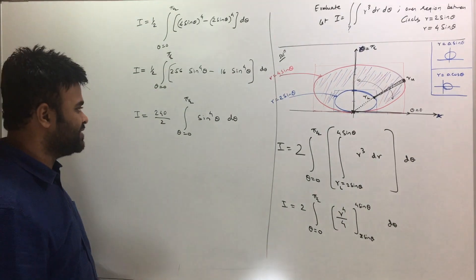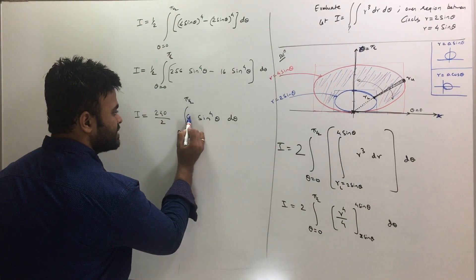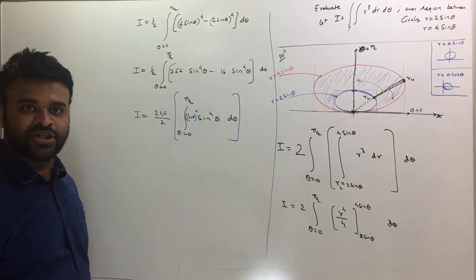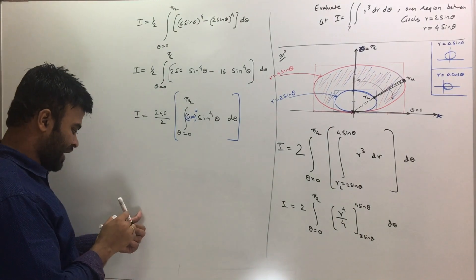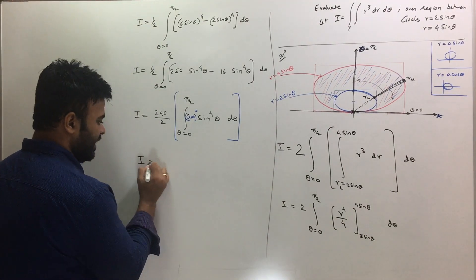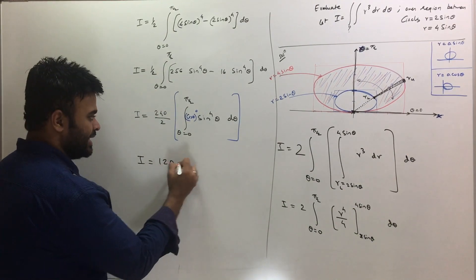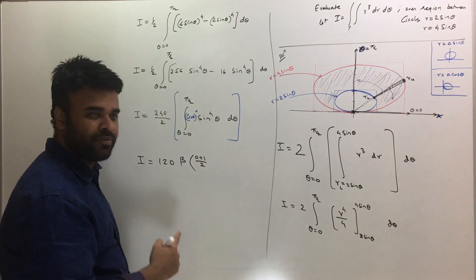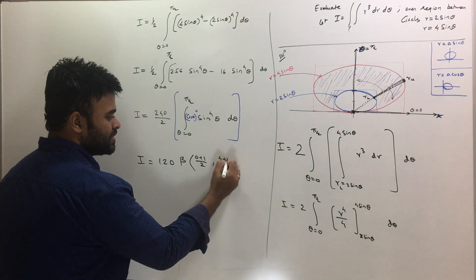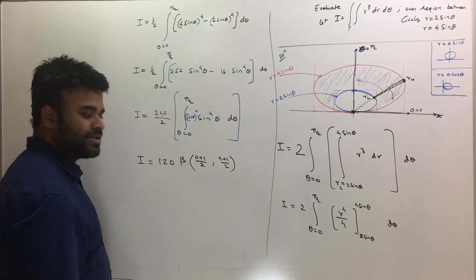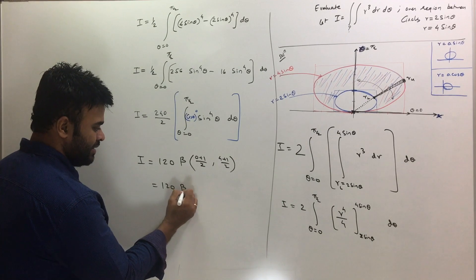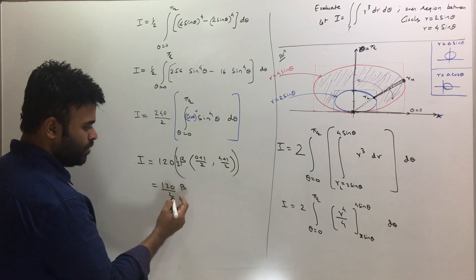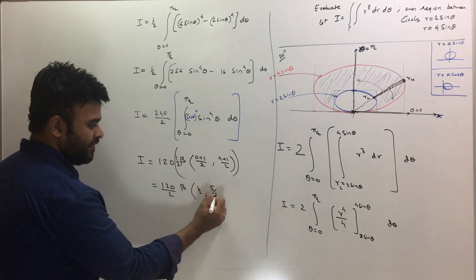There is no cosθ term, so I can write cos⁰θ, and this is now in the perfect form for the beta function. So I = 120 · (1/2) · β(1/2, 5/2). That is 60 · β(1/2, 5/2). Converting to gamma functions: β(1/2, 5/2) = Γ(1/2)·Γ(5/2) / Γ(1/2 + 5/2) = Γ(1/2)·Γ(5/2) / Γ(3). Since Γ(3) = 2! = 2, we get I = 30 · Γ(1/2) · Γ(5/2).